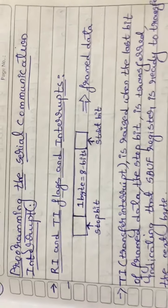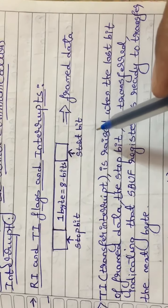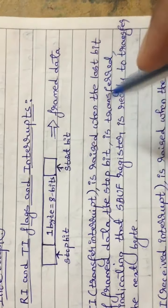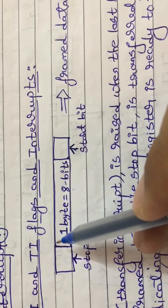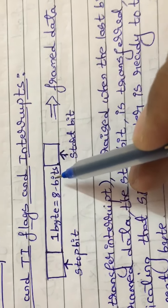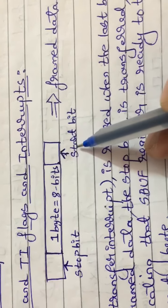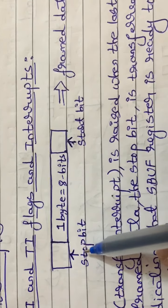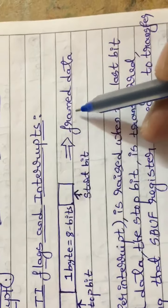Before starting with Serial Communication Interrupt, let us look at how data is sent from source to destination. The data is sent in terms of bytes. One byte is equal to 8 bits. In front of the byte there is a start bit, and at the end there is a stop bit. This whole structure is called a frame or framed data.